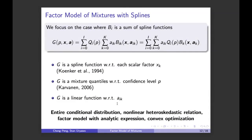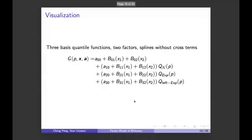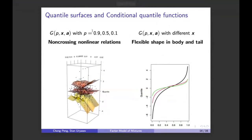We indeed achieve the goals stated at the beginning: we have the entire conditional distribution, a smooth quantile function, and we can model nonlinear heteroscedastic relations with an analytic expression for the conditional quantile function, and parameter estimation by convex optimization. To visualize what this model looks like — if we fix p at a certain confidence level and vary X, we obtain a quantile surface. Here are three quantile surfaces at 0.9, 0.5, and 0.1 probability — they don't cross each other but can model very nonlinear relations.